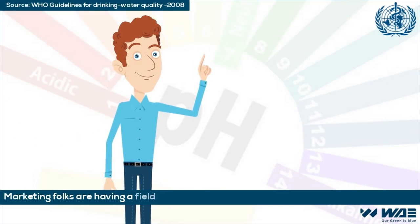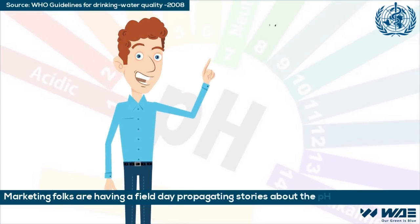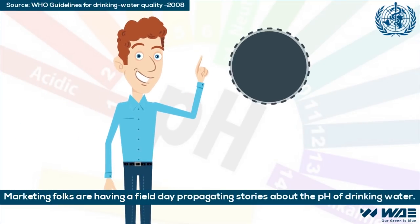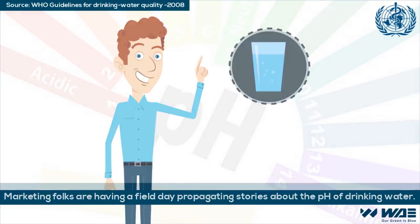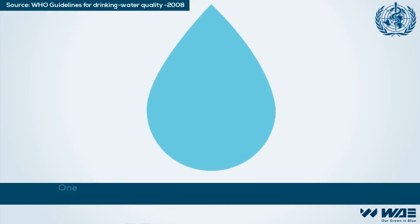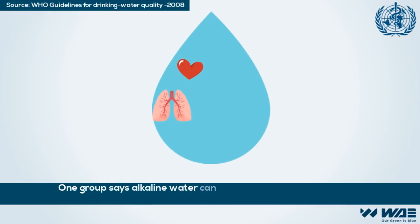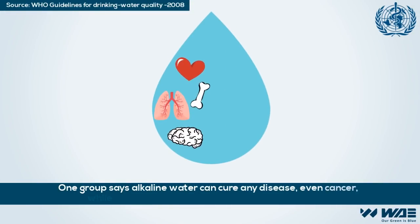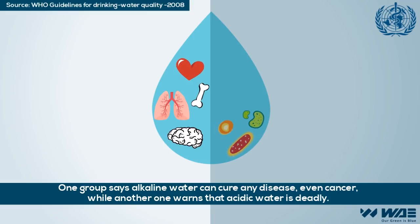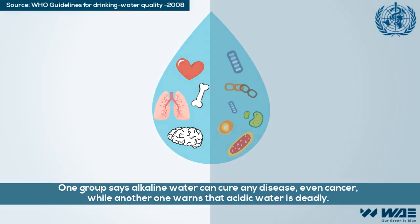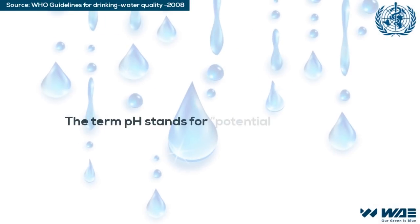Marketing folks are having a field day propagating stories about the pH of drinking water. One group says alkaline water can cure any disease — even cancer — while another one warns that acidic water is deadly.